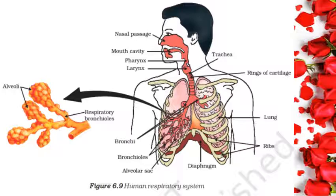All animals have a structure that increases the surface area in contact with the oxygen in the atmosphere. Since the exchange of oxygen and CO2 has to take place across this surface, it is very fine and delicate. In order to protect this surface, it is usually placed within the body, and there is a passage that will take air into this area, along with a mechanism for moving air in and out.